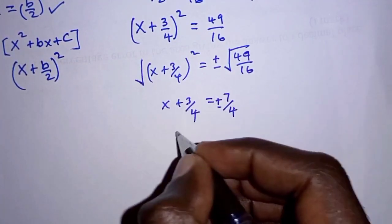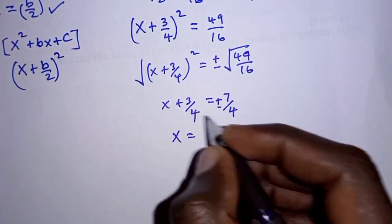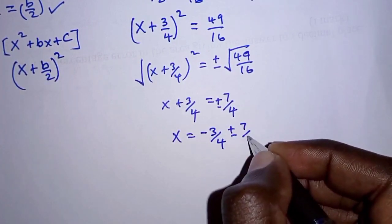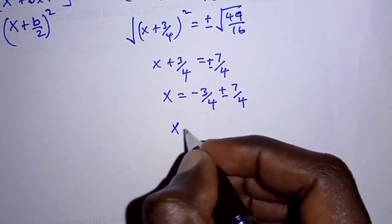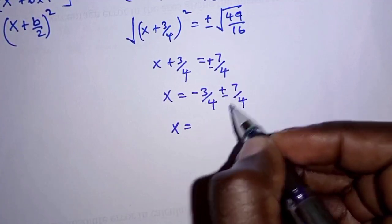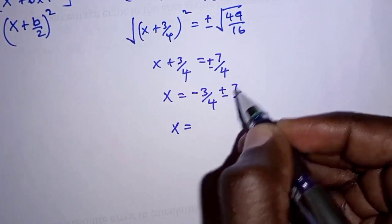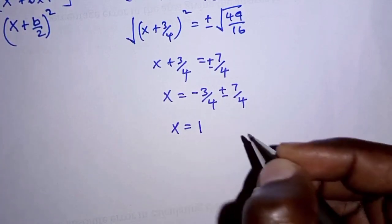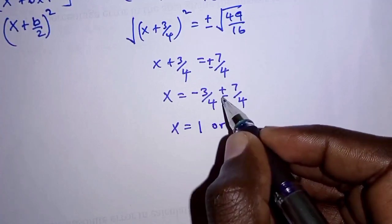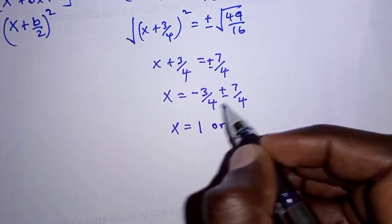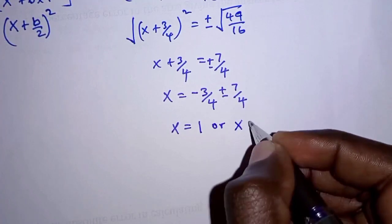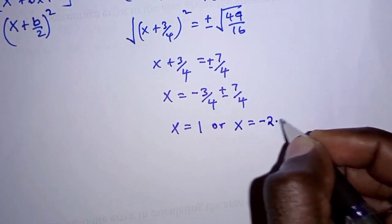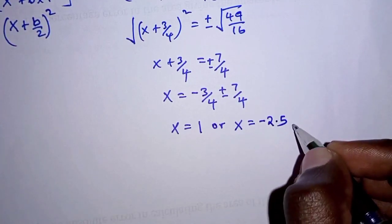To determine x, we move 3 over 4 to the right hand side, giving x equals negative 3 over 4 plus or minus 7 over 4. The first value of x is obtained by adding: 7 over 4 minus 3 over 4 equals 4 over 4, which is 1. The second value uses subtraction: negative 3 over 4 minus 7 over 4 equals negative 10 over 4, which is negative 2.5. These are the solutions to the problem.